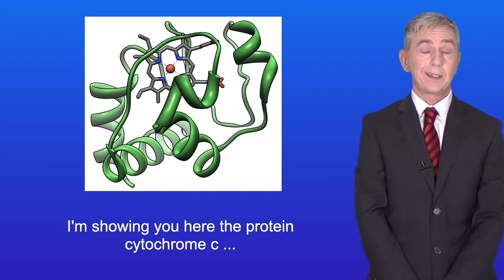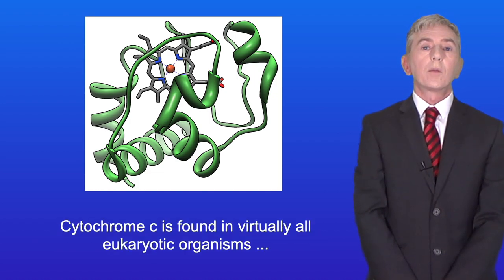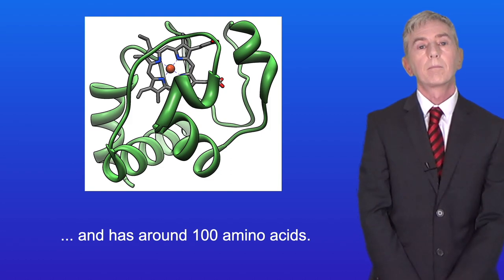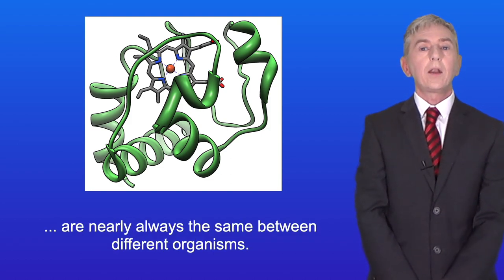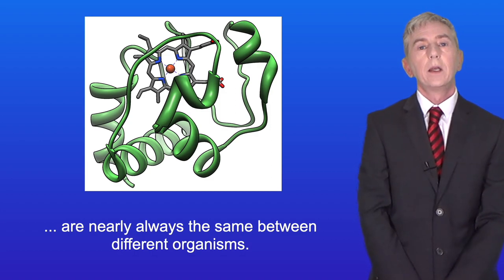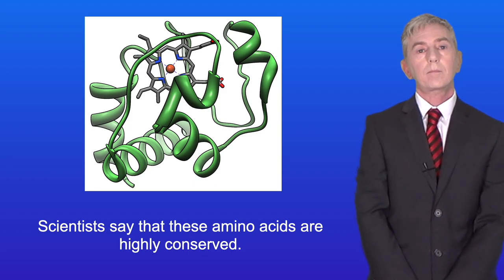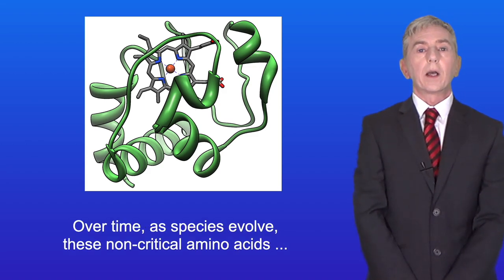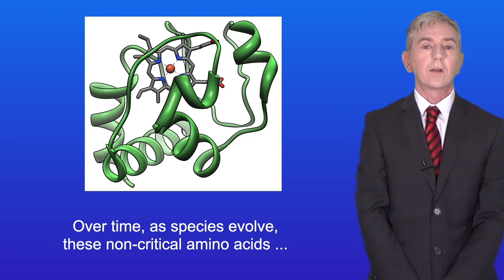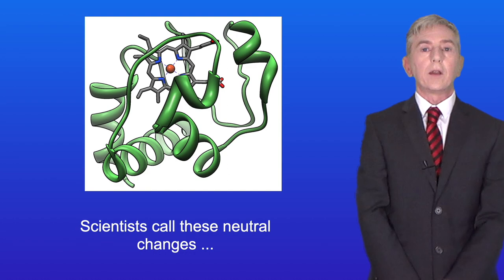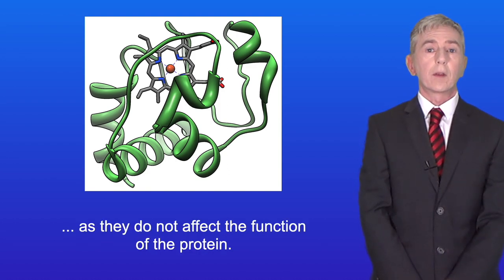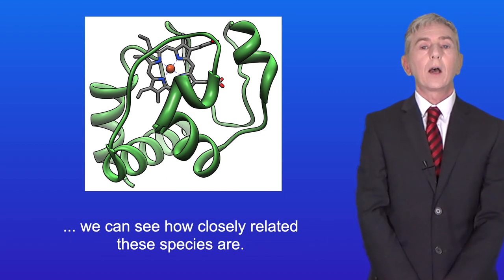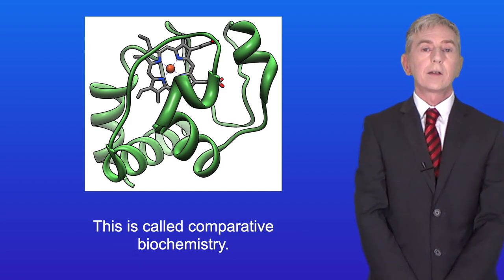I'm showing you here the protein cytochrome c, which is involved in aerobic respiration. Cytochrome c is found in virtually all eukaryotic organisms and has around 100 amino acids. Amino acids that are essential for the protein's function are nearly always the same between different organisms — scientists say these amino acids are highly conserved. However, a number of amino acids in the protein are not critical for its function. Over time, as species evolve, these non-critical amino acids can change between different species — scientists call these neutral changes. By comparing the amino acid sequences of cytochrome c from different species, we can see how closely related they are. This is called comparative biochemistry.